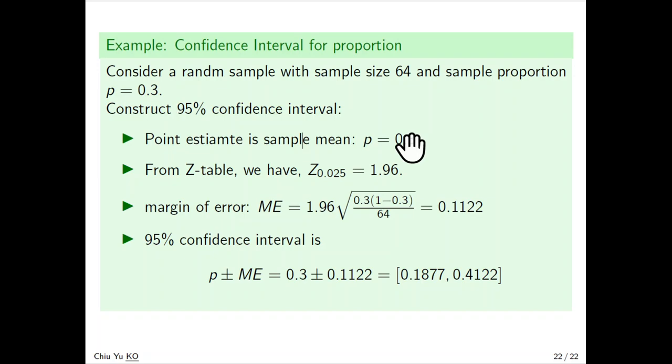The margin of error will be 1.96 times the square root of 0.3 times 0.7 over n, which is 0.1122. So the confidence interval is given by the point estimate plus or minus the margin of error.